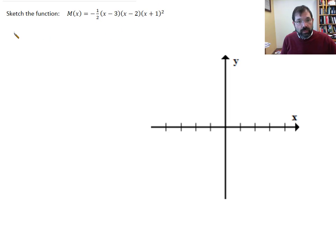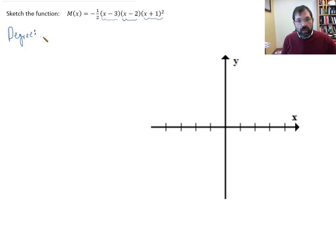Let's consider the degree. What's the degree of the polynomial? We have a degree 1, degree 1, and degree 2. So the degree of the polynomial is 1 plus 1 plus 2, that's 4. And so it's even — we have an even degree polynomial.